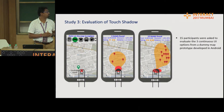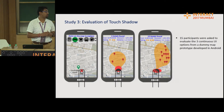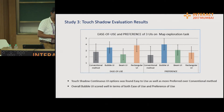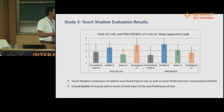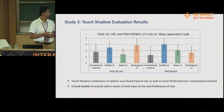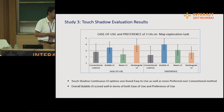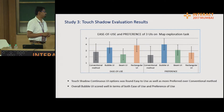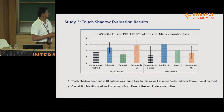We conducted this experiment with 15 participants who tried the prototype using the three UI methods and gave feedback via a Likert scale post-experiment questionnaire, with 5 being the highest (most easy to use and preferable). The results show that the interfaces we proposed and the touch shadow gesture were rated as more easy to use and preferable compared to the conventional method — participants also tried the conventional method on Google Maps. An additional finding was that the Bubble UI scored well in both ease of use and preference.